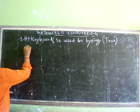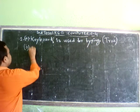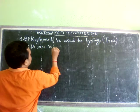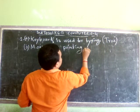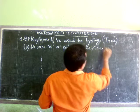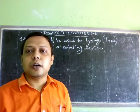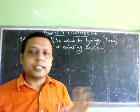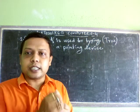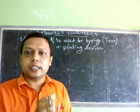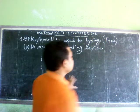Now number D: Mouse is a pointing device. Mouse helps us to point the object because we can see the mouse pointer as an arrow, and an arrow has a point or needle type point in its head. So mouse is a pointing device — it is true.